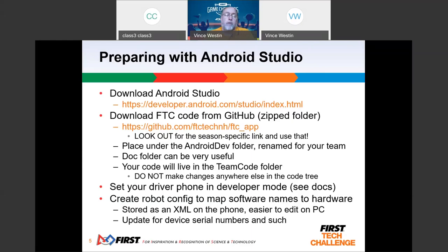There's a doc folder in there that can be pretty useful. Everything you want to put in there goes in the folder called team code. Don't make changes elsewhere in the code tree. Everything you're going to do — other than your XML files for configuration — lives in the team code folder. When you want to update, take your entire Android Studio folder, rename it to dash-old, install the new version from GitHub, then copy over the team code. The only things you should be taking are the team code folder and the XMLs for running the robot.